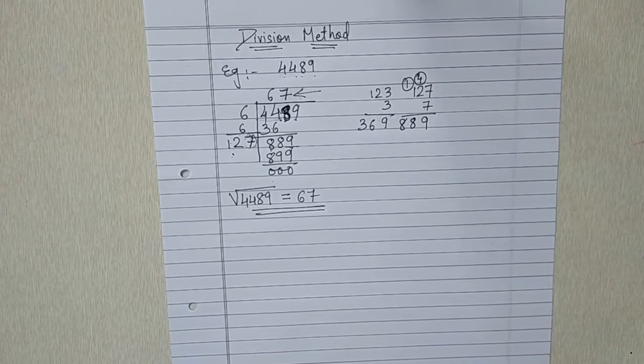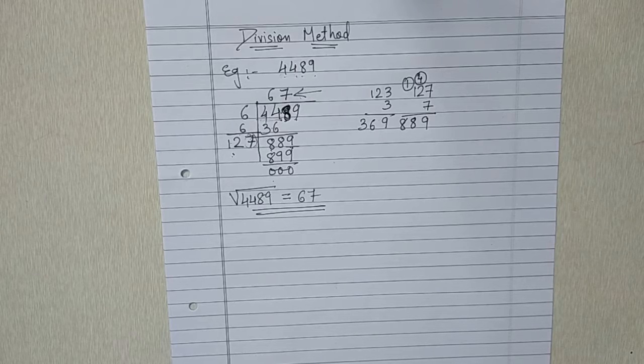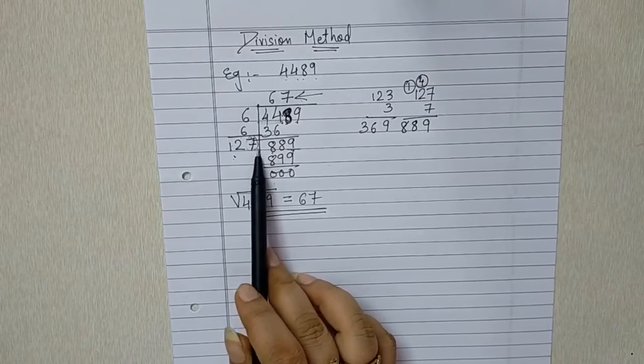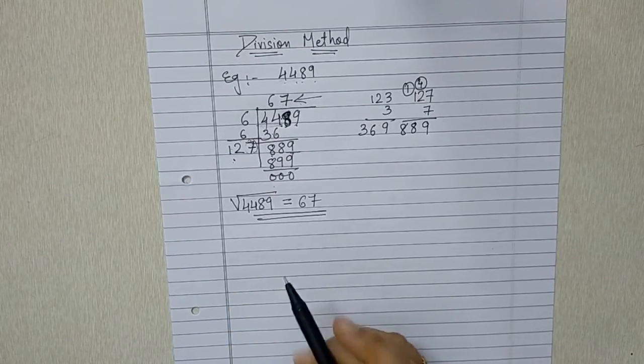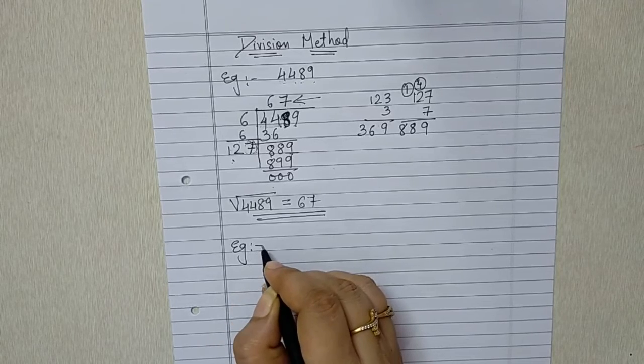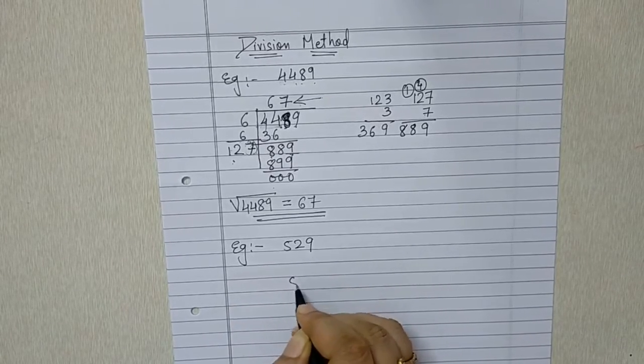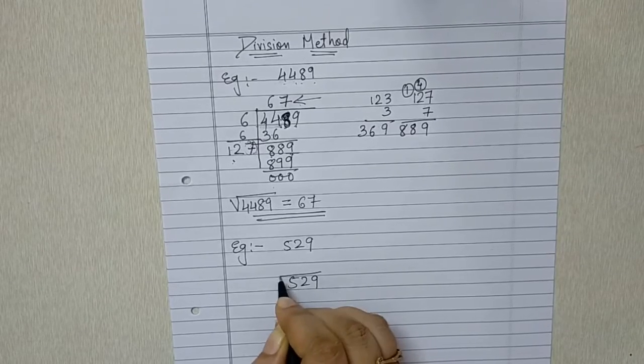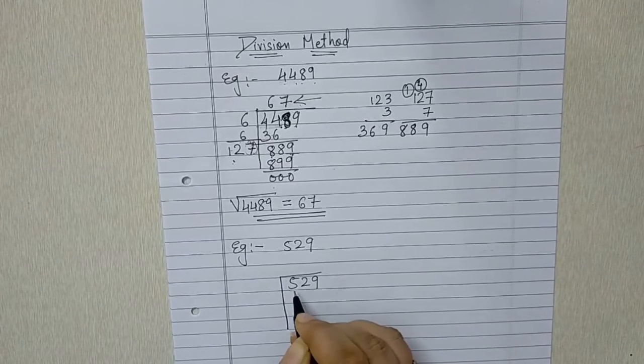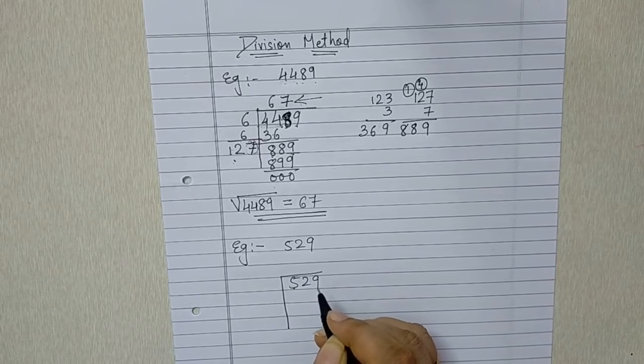It's very easy. You just need to concentrate and remember the properties to know which number is to be added over here. Now one example we will be seeing of 3 digit. Let us take 529. So 529 is a 3 digit number. So first of all we will be taking only 5 and then 29 together.